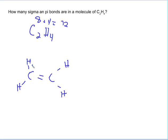A single bond is always a sigma bond, so we have a sigma here, a sigma here, a sigma here, and a sigma here. A double bond always contains one sigma and one pi. So counting up: one, two, three, four, five sigmas and one pi. That's how you figure out the number of sigma and pi bonds in C2H4.